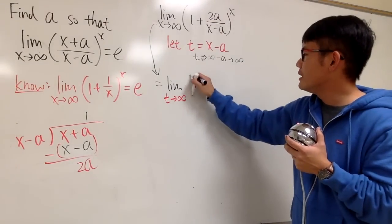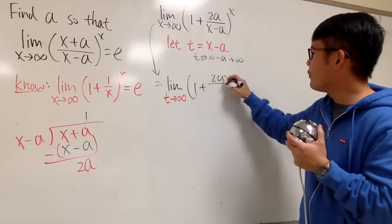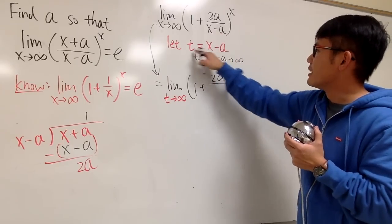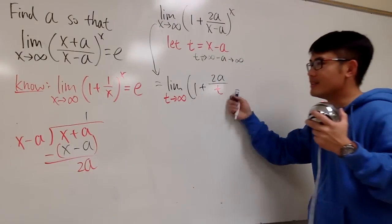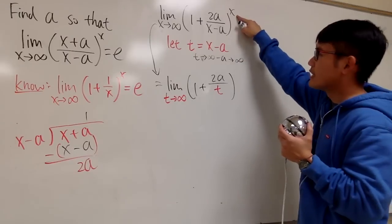Alright! And now, let's put down this. 1 is just a 1. 2a is just a 2a, so plus 2a, over x minus a is the t that we know, that we set it to be. And now, this looks so similar to that, huh? And raised to the x power.